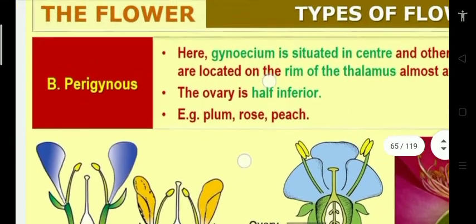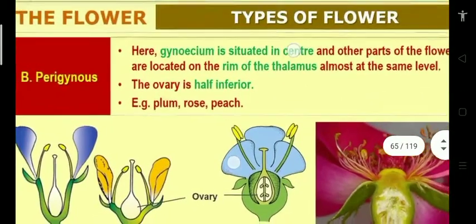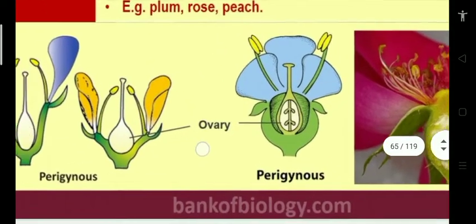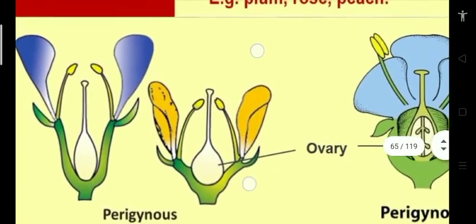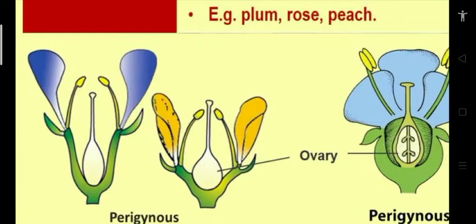Next, perigynous flower: gynecium is situated in the center of the thalamus, while other floral parts are located at the rim of the thalamus — almost at the same level. The ovary is not completely inside, so it is half-inferior or half-superior. Examples: plum, rose, peach.